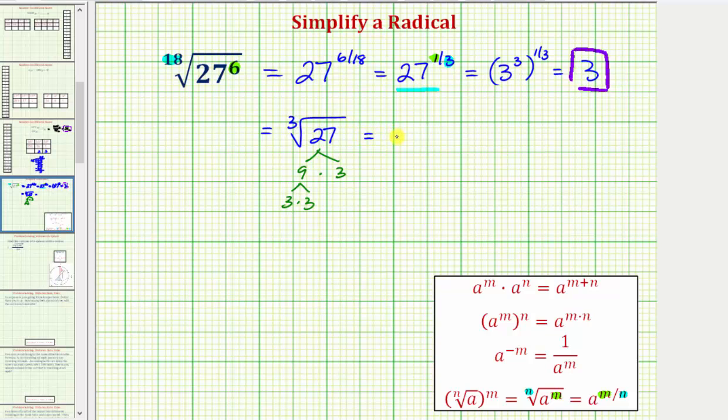We can rewrite this as the cube root of 3 times 3 times 3, or if we want, the cube root of 3 to the 3rd. And the cube root of 3 to the 3rd simplifies perfectly to one factor of 3.